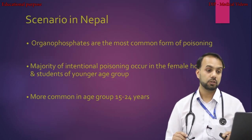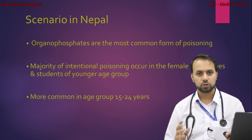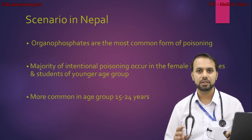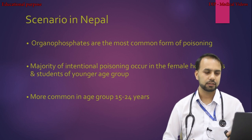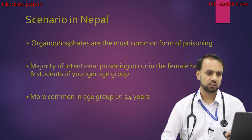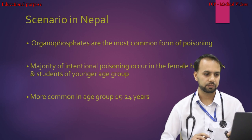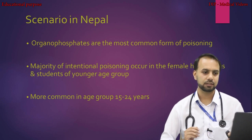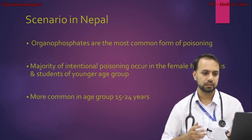In Nepal's context, the most common poisoning is organophosphate poisoning, and the majority of intentional poisoning occurs in female housewives and students of younger age groups. The common age group is between 15 to 24 years, where impulsive acts are more common.